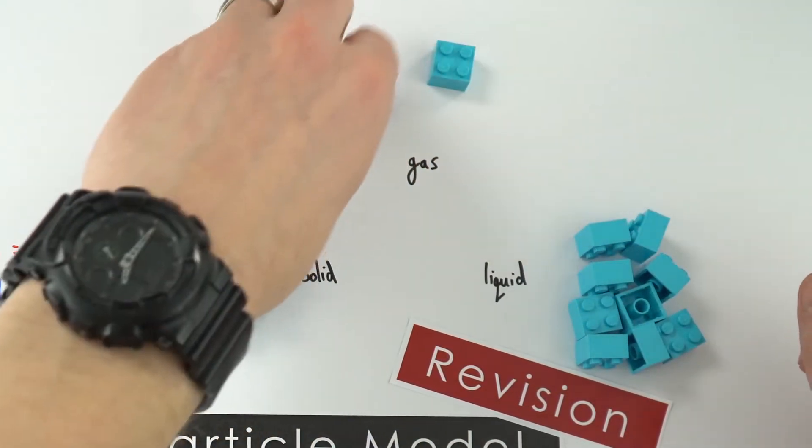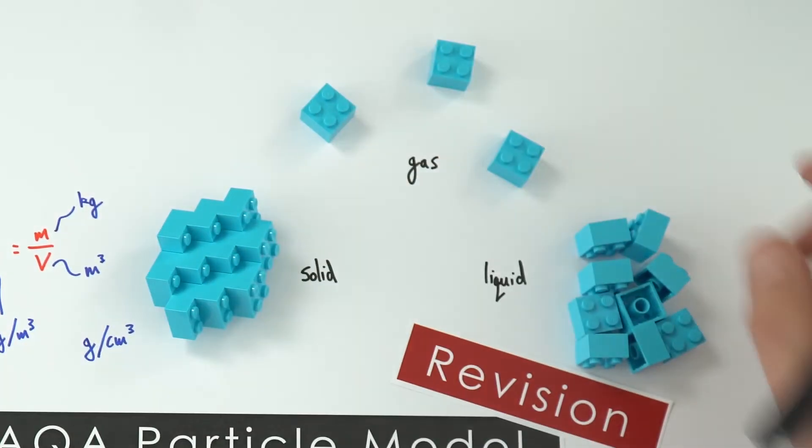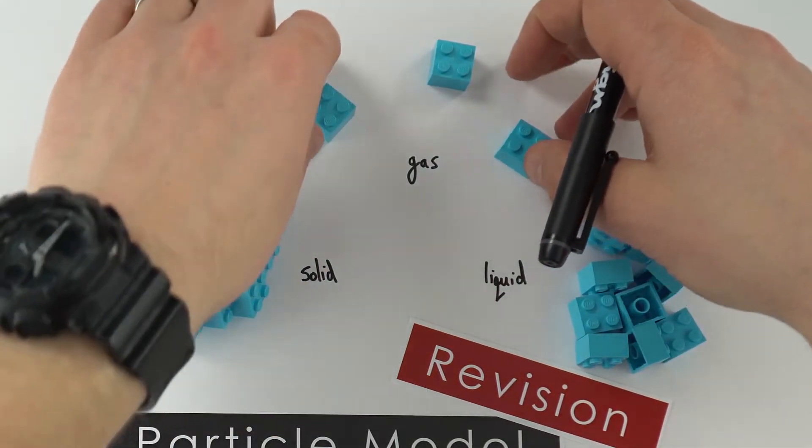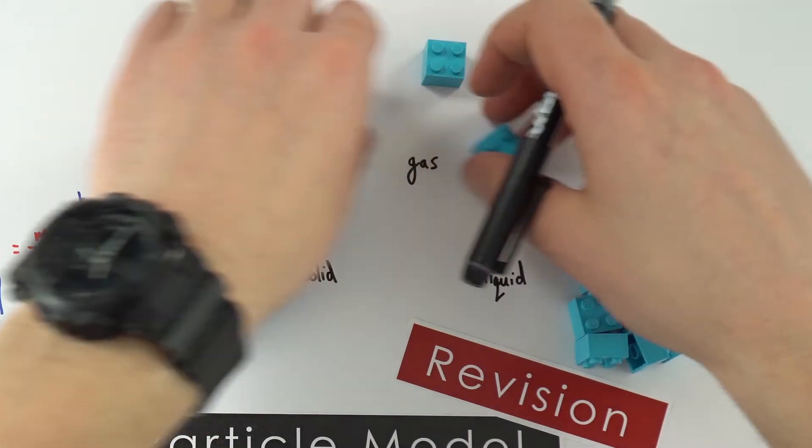In a gas, the particles are spread quite a long way away. They're moving quickly in all random directions. Because of this, we can do things like compress a gas or whatever.